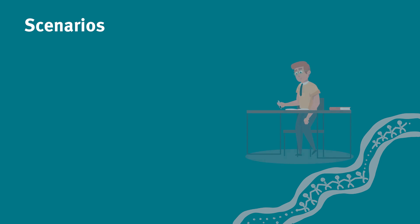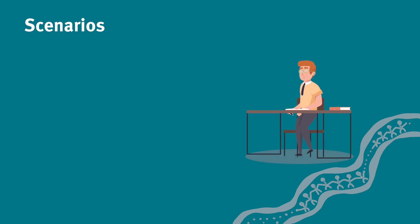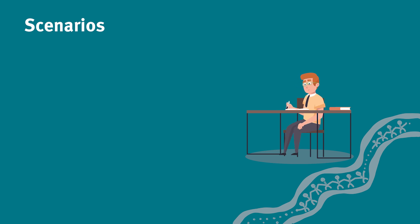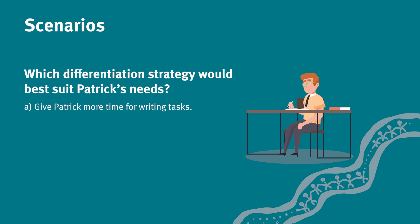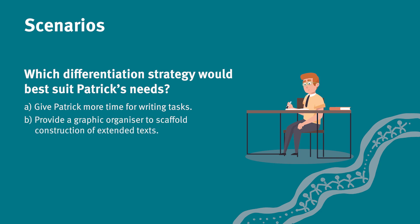Think about the following scenario. Patrick's academic record and most recent formative assessment shows that he can write simple sentences, but is still developing skills in extended writing. Which differentiation strategy would best suit Patrick's needs? A. Give Patrick more time for writing tasks. B. Provide a graphic organiser to scaffold construction of extended texts. C. Allow Patrick to choose a topic to write on.